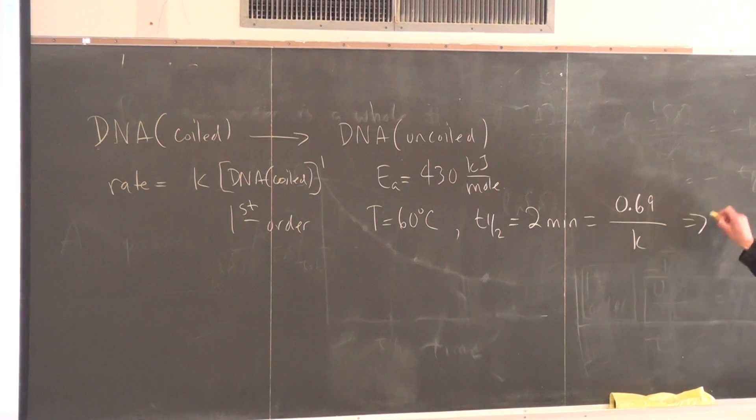So, let's do that. K is equal to 0.69 divided by 2. And that's equal to 0.345. And this will be in minutes to the minus 1. So again, at 60 degrees, this is going to be our rate constant K.